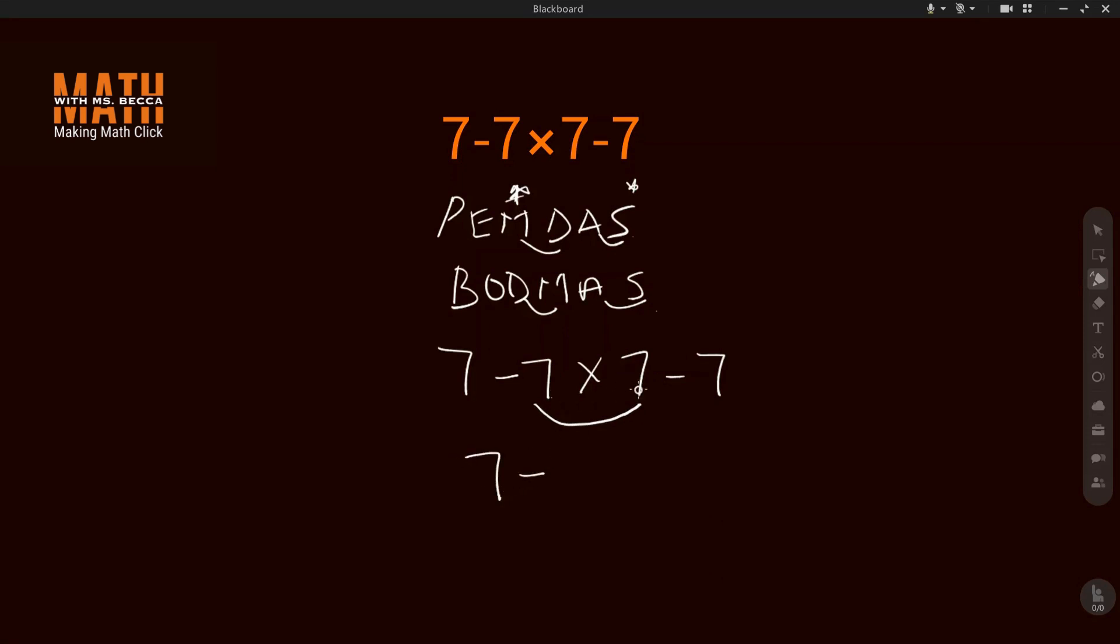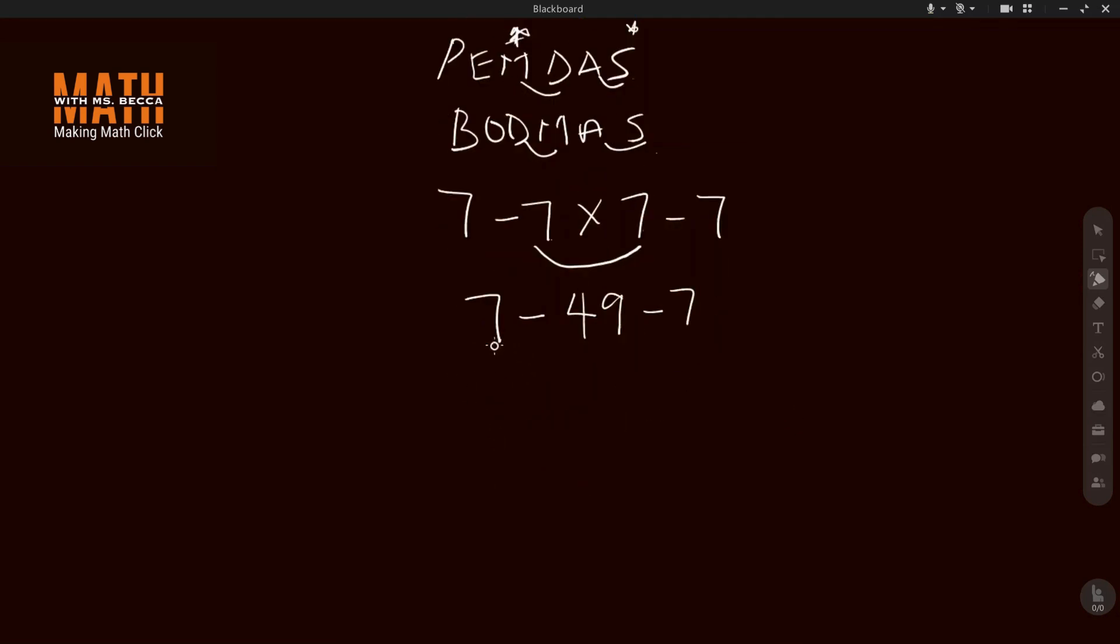So this would give 7 minus - 7 times 7 would give 49 - so this would be 7 minus 49 minus 7. And this would be 7 minus 7 will become 0, if we say 7 minus 7 this will become 0.